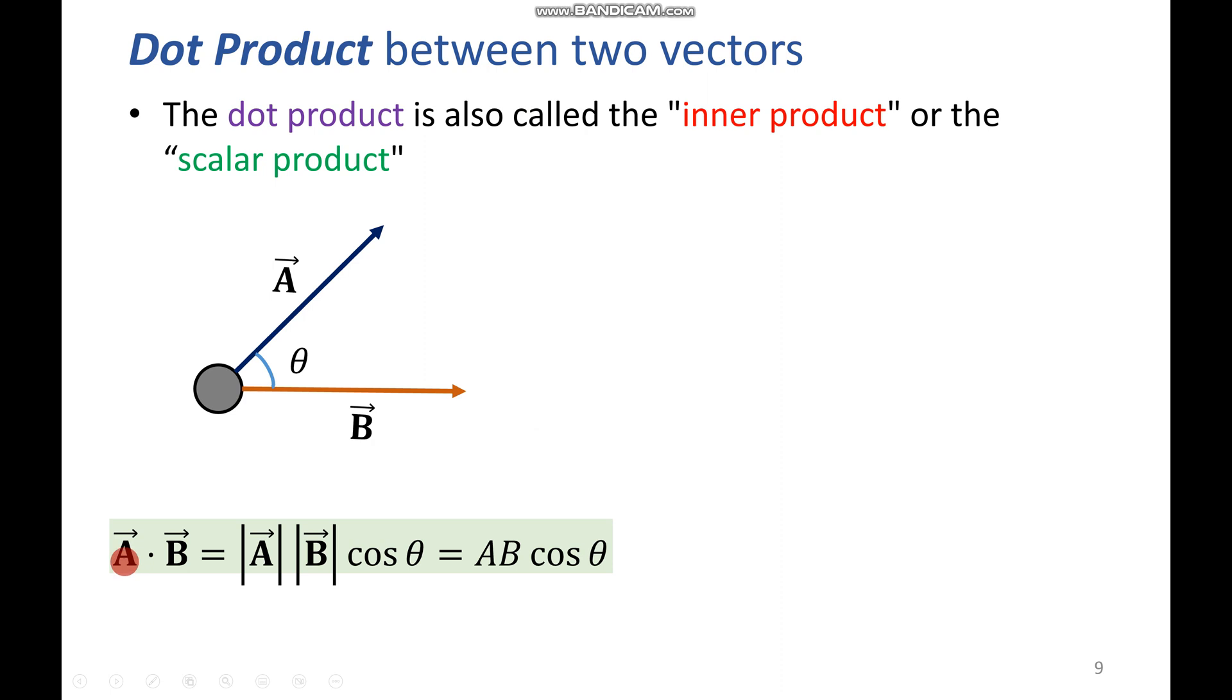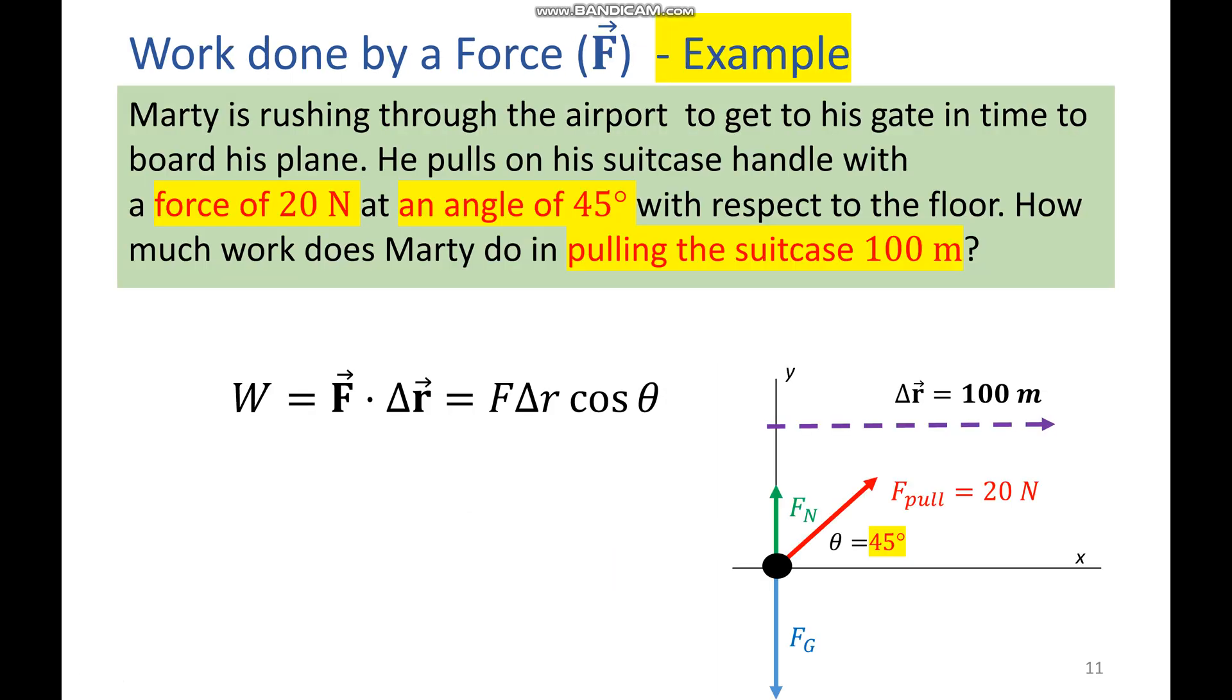we'll see it right here. The dot product of vector A with vector B is the magnitude of A and B times cosine theta. Or you can do it here like this as well. So here,